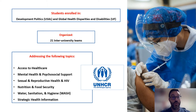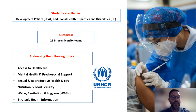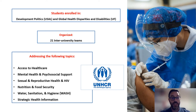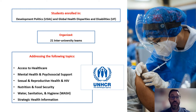They were organized into 21 mixed groups, meaning that there were students from both universities in every team. They worked on topics including access to healthcare, mental health and psychosocial support, sexual and reproductive health and HIV, nutrition and food security, water, sanitation and hygiene, and strategic health information — the main areas where the United Nations High Commissioner for Refugees places its focus.